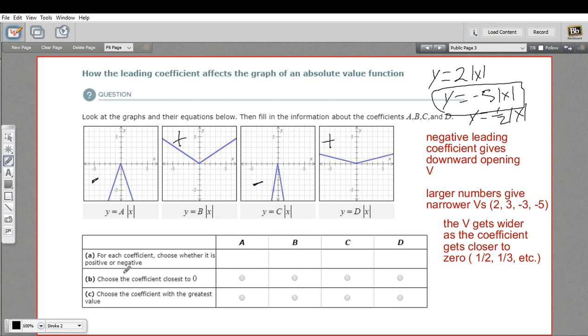Let's see if we can answer these questions. Part A says, for each coefficient, choose whether it is positive or negative. We labeled our graph, so that's easy. A is negative because it opens downward. B is positive, C is negative, and D is positive, another upward-opening V.